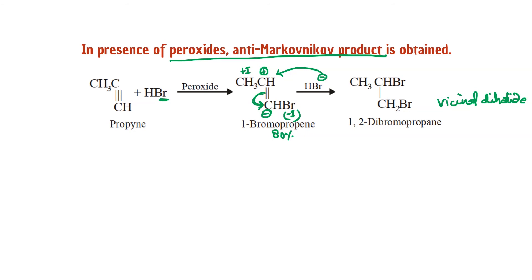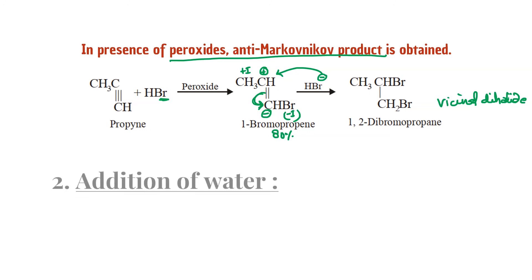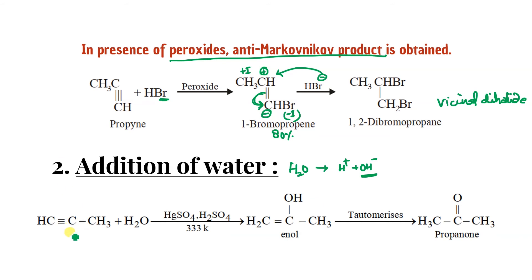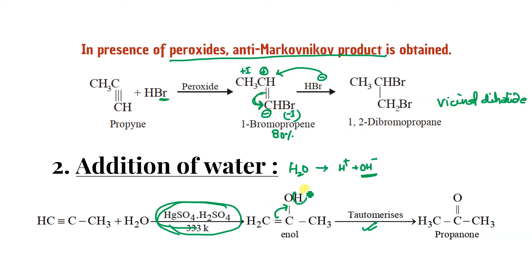Addition of water: H₂O splits into H⁺ and OH⁻. Following Markovnikov's rule, OH⁻ attaches to the multiple-bonded carbon where hydrogen is less — giving an enol intermediate. This reaction occurs in presence of HgSO₄ and H₂SO₄. The enol undergoes tautomerization: the H shifts and the bond rearranges to form a ketone — for example, propanone.